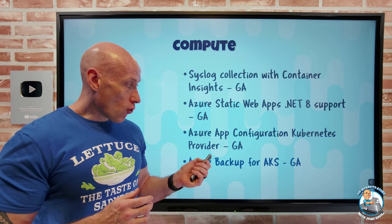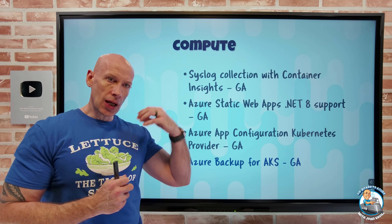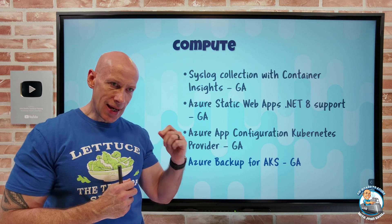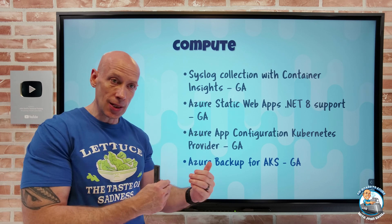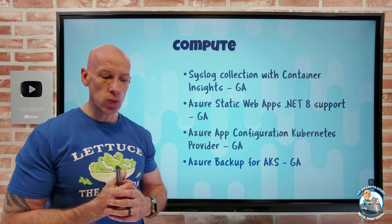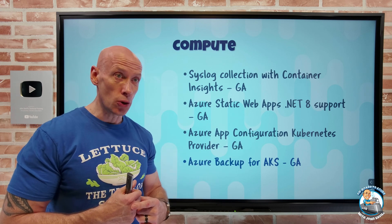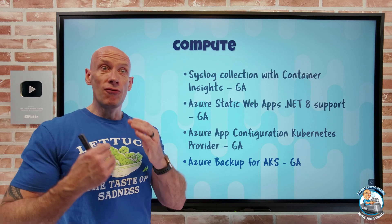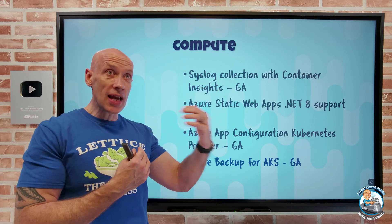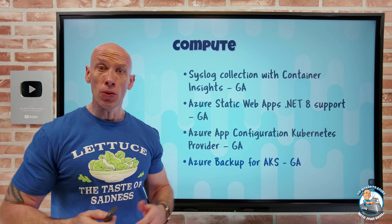Azure Backup for AKS has gone GA. This covers both the cluster configuration and application data stored on persistent CSI-based Azure Disks — it can back up and protect that data as well, and you can restore it to clusters in different subscriptions if needed. If you already have infrastructure as code, good DevOps processes, and stateful data backed up other ways, this may not be critical, but it's good to have as an option.